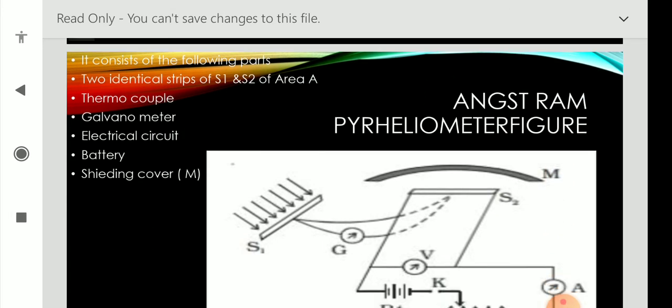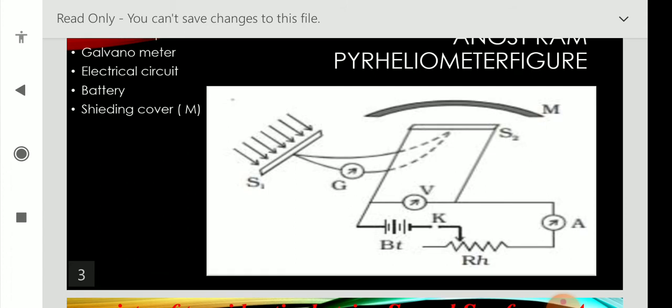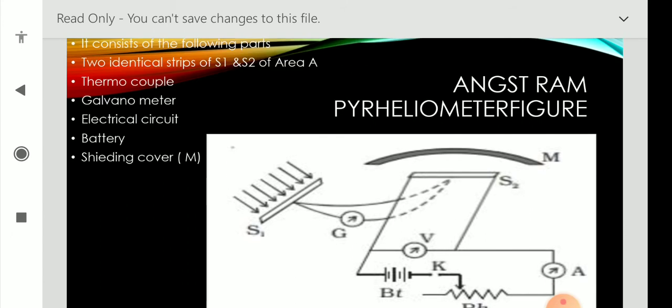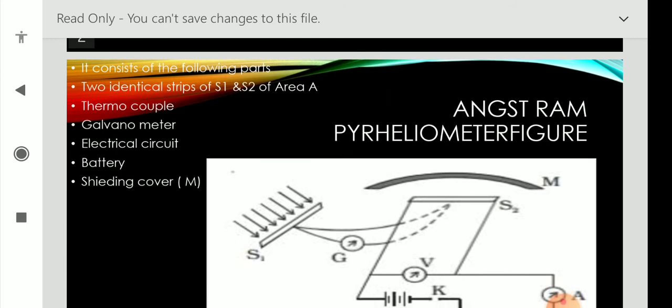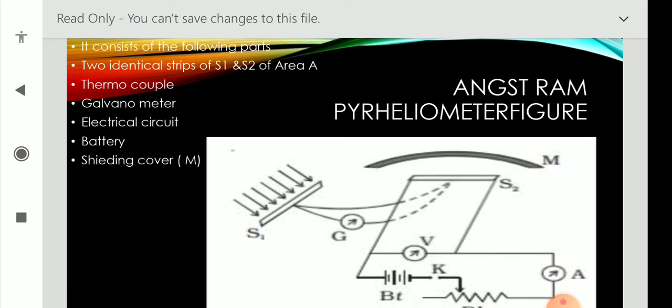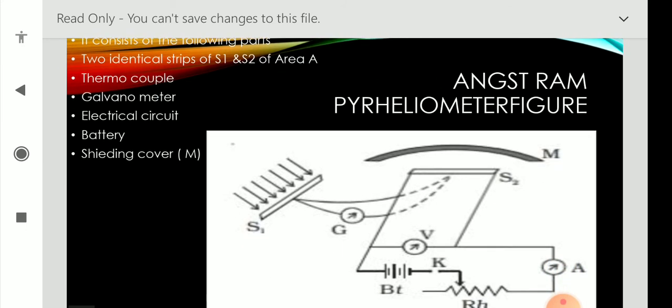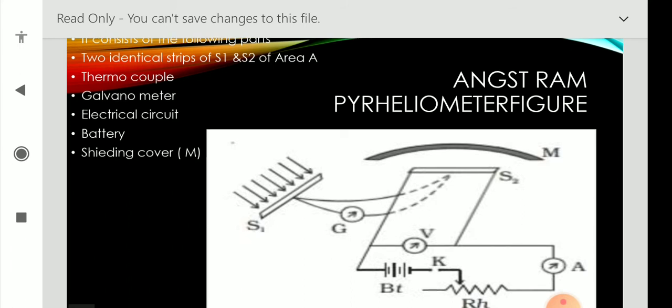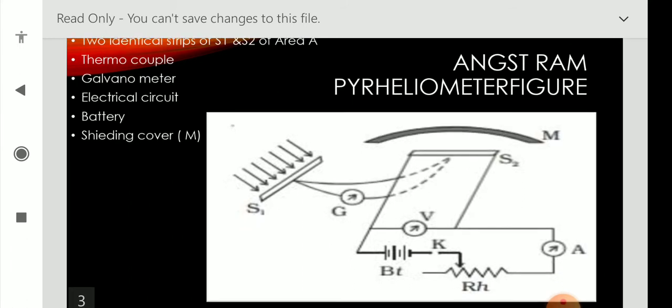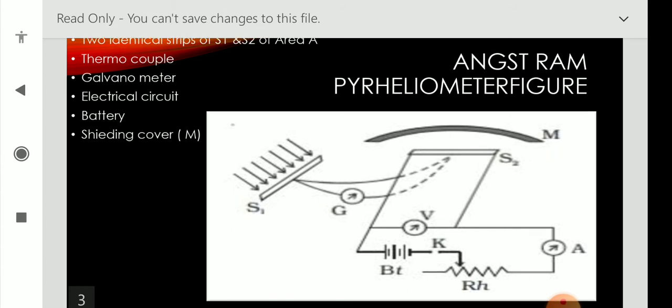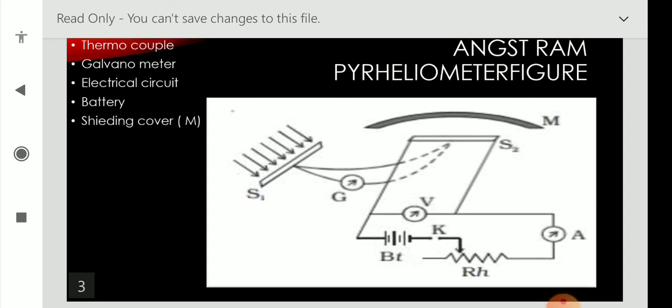This is the schematic diagram of pyrheliometer. It consists of the following parts: two identical strips S1 and S2 of area A, thermocouple, galvanometer, electrical circuit, battery, shielding cover. That is a spelling mistake, we need to consider it as shielding cover, protecting cover M.